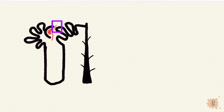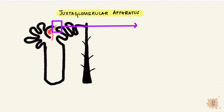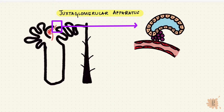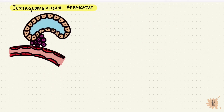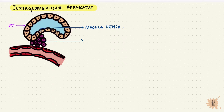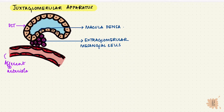This portion of the nephron has the juxtaglomerular apparatus. The JGA has three kinds of cells: modified cells of the distal convoluted tubule called the macula densa, the extraglomerular mesangial cells, and modified smooth muscle in the wall of the afferent arteriole called the juxtaglomerular cells.